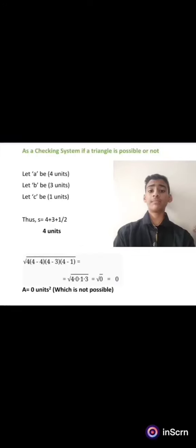So this was the main principle of Heron's formula, how to calculate the area of a triangle. But now Heron's formula is not only used to find the area of a triangle, but also acts as a checking system if a triangle can be formed or not.